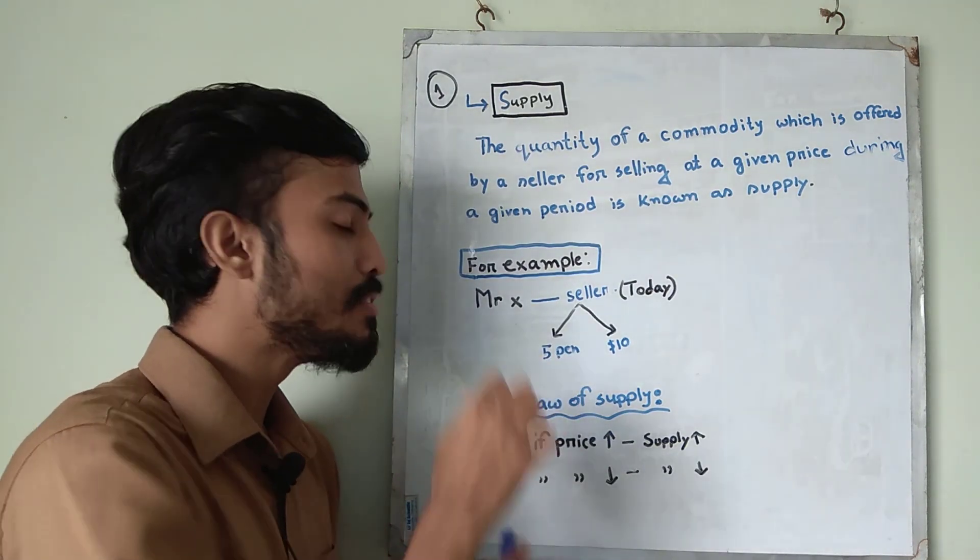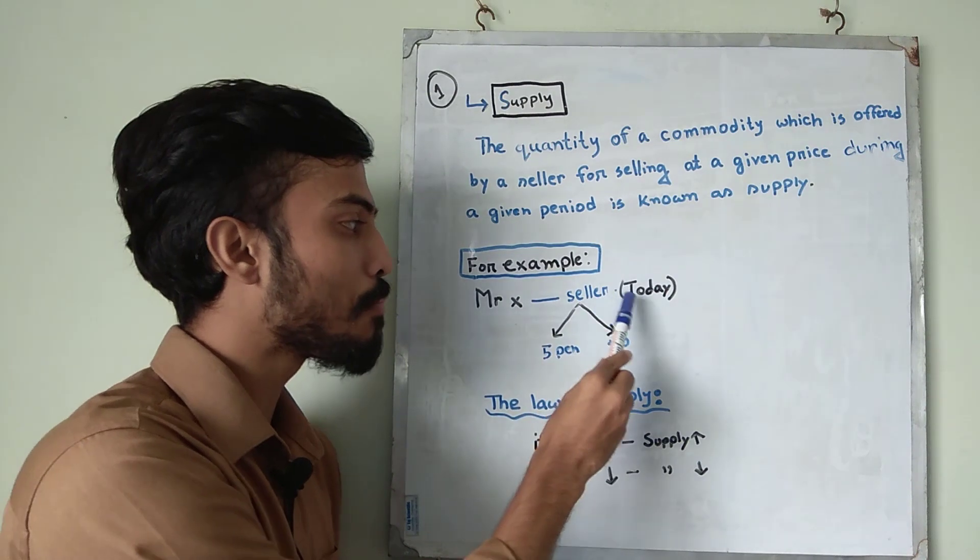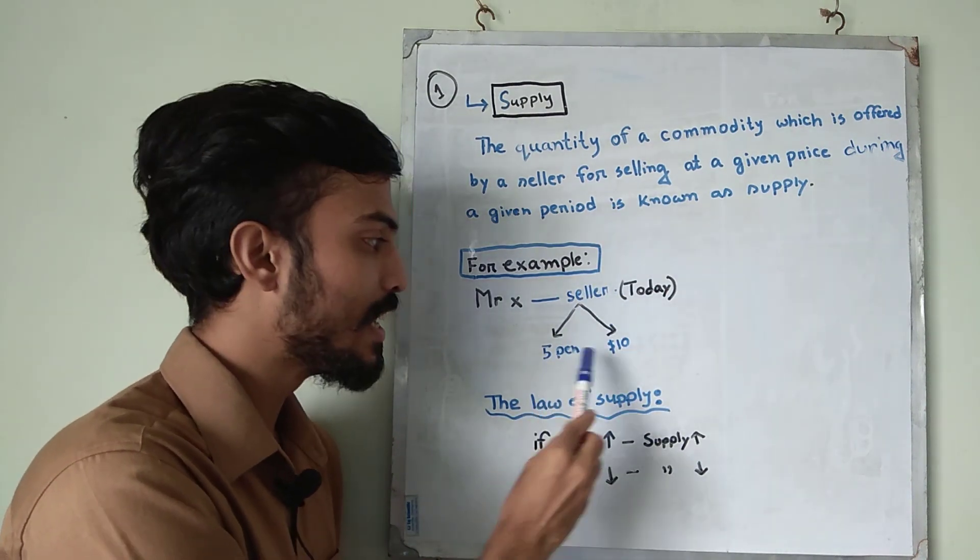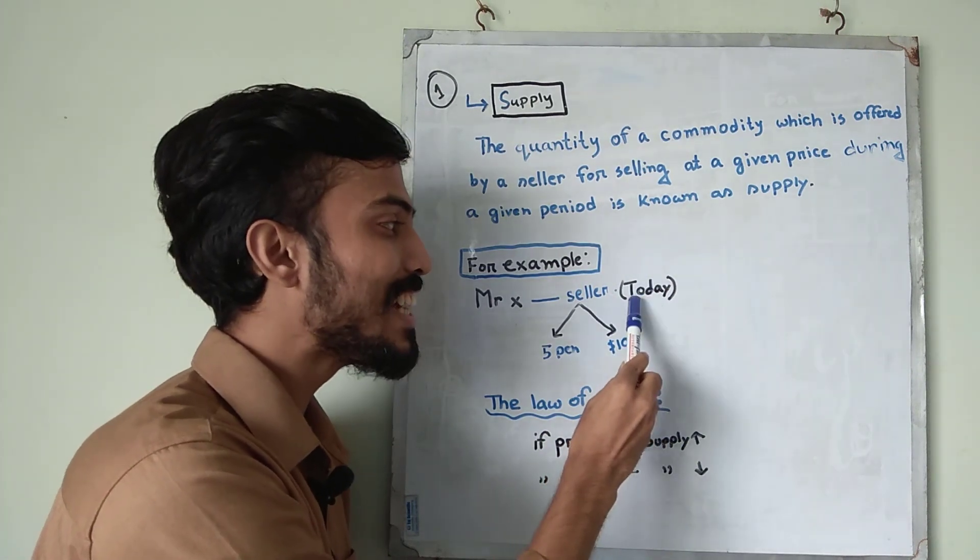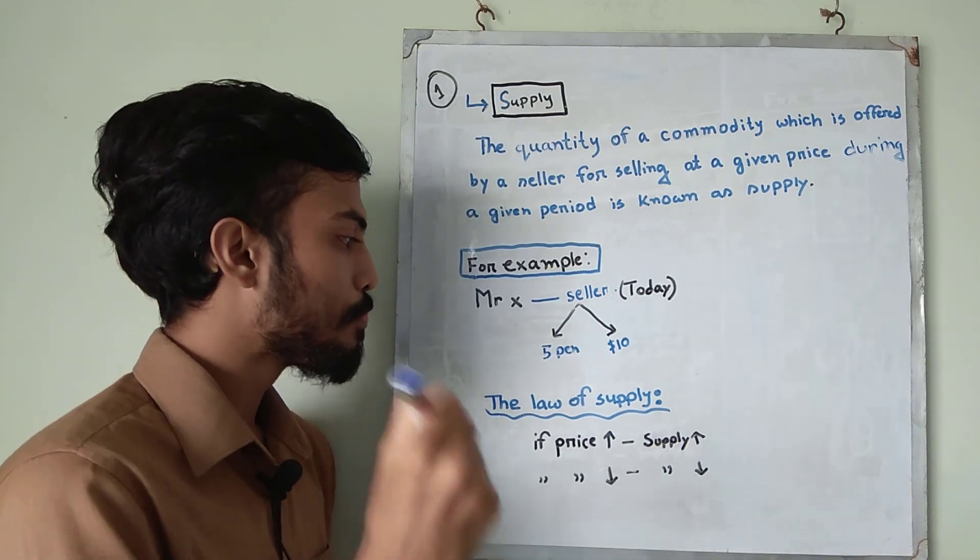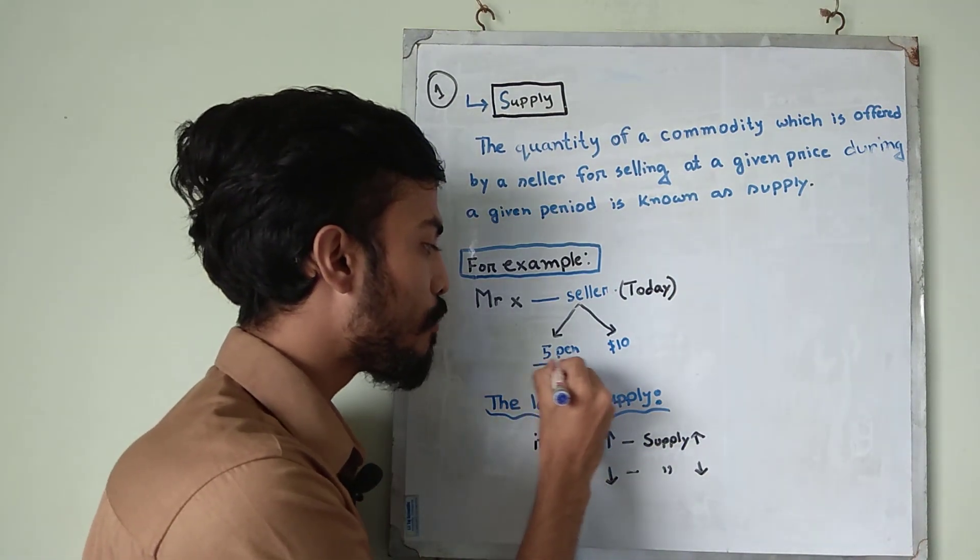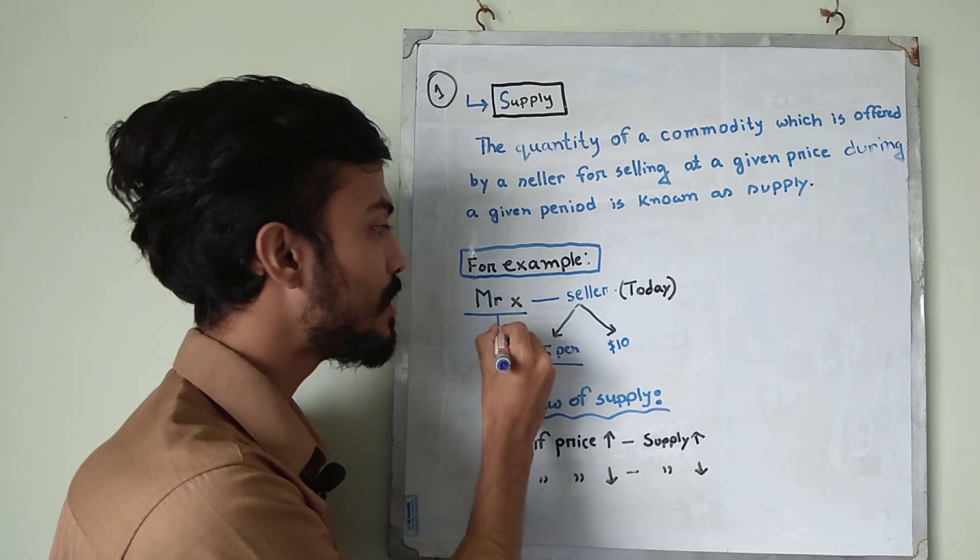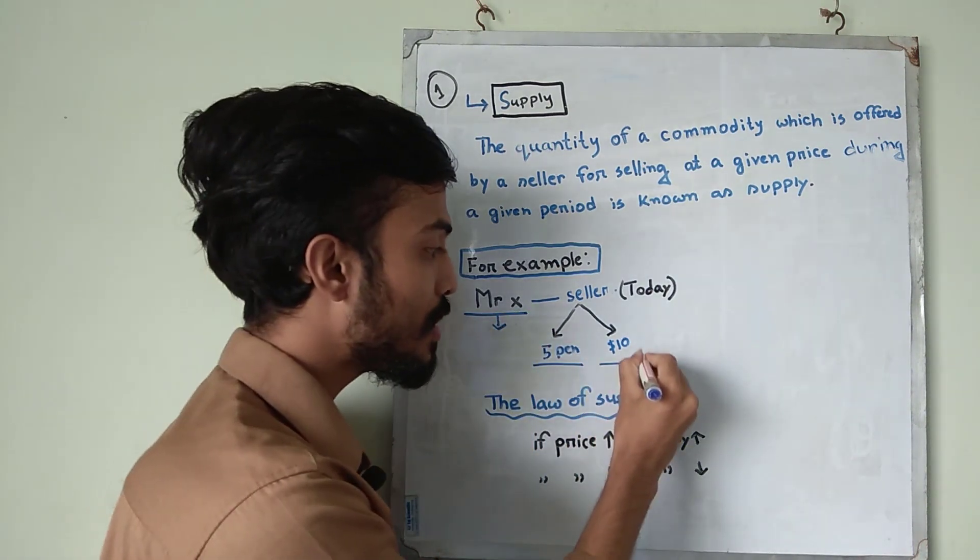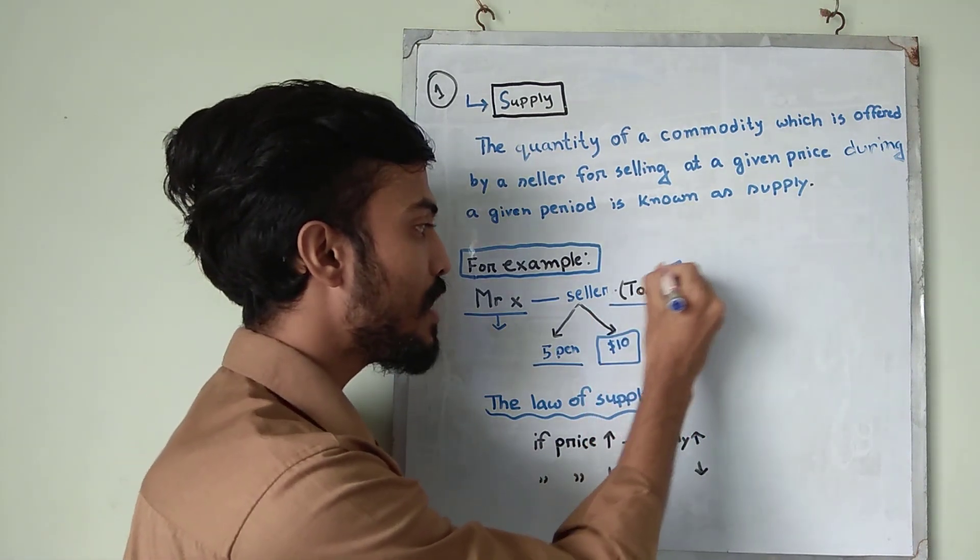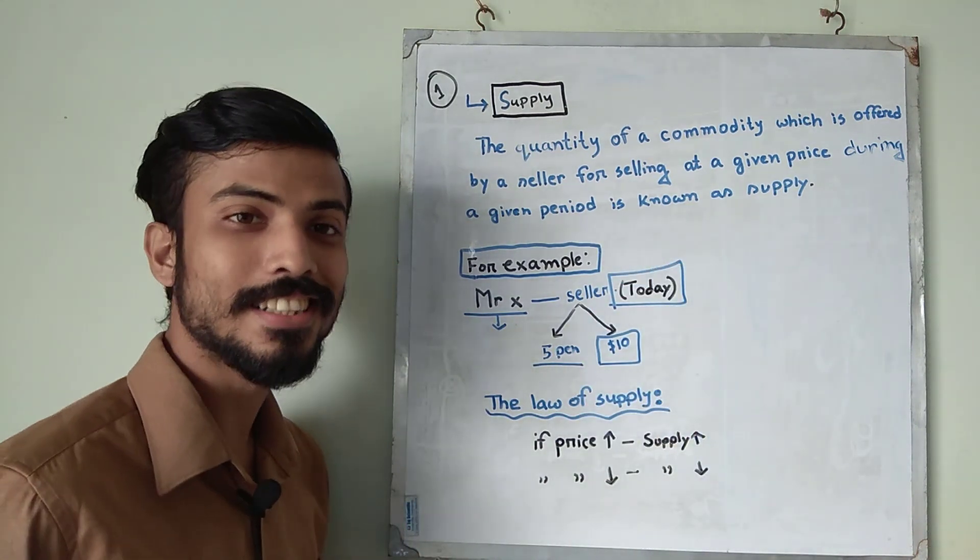For example, Mr. X is a supplier or seller. He wants to sell 5 pens, $10 each and he wants to sell it today. So the quantity of commodity which is offered by a seller at a given price and during a given period is called supply.